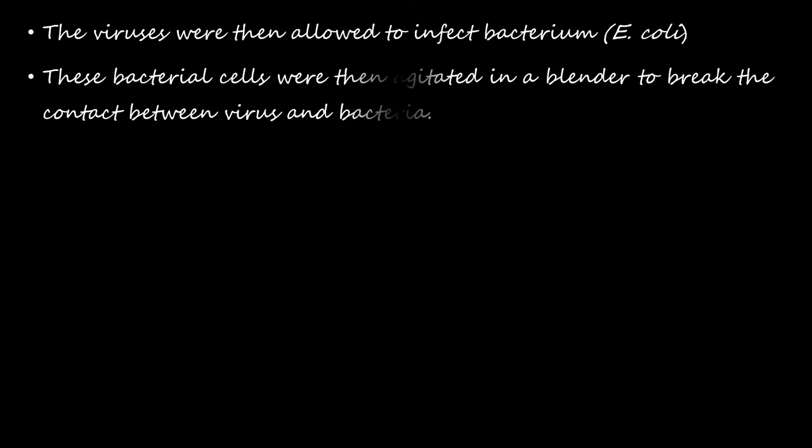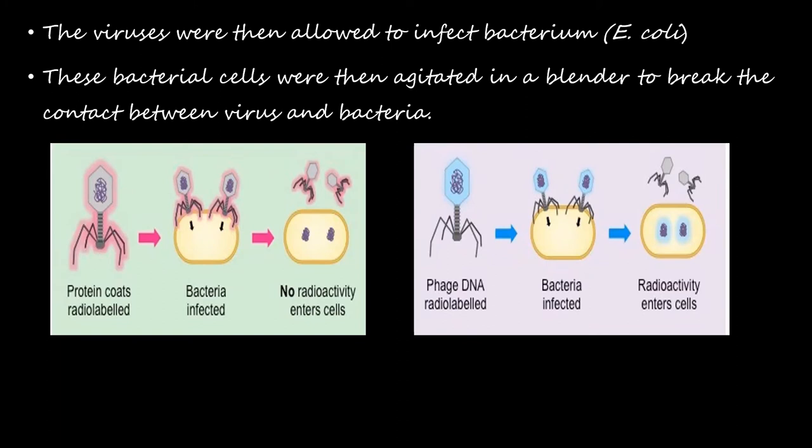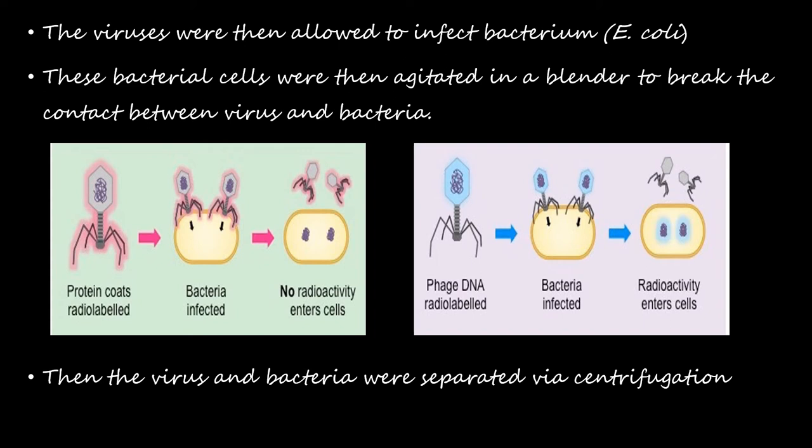The viruses were then allowed to infect bacterium, that is E. coli. These bacterial cells were then agitated in a blender to break the contact between viruses and bacteria. In the first set we have protein coats radiolabeled. The bacteria are infected with the bacteriophages, and after blending we see that no radioactivity enters the cells. While in the second case, the phage DNA is radiolabeled, the bacteria are infected with the phages, and we finally see the radioactivity enters the cells because the DNA is radiolabeled.